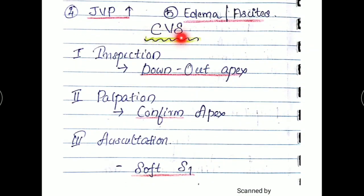Going into the systemic examination of cardiovascular system. On inspection, you can get down and out apex because of dilation of the left ventricle. You have to confirm this finding in the palpation. Apex has to be confirmed. It may be in the 6th intercostal space, may be lateral to the midclavicular line.